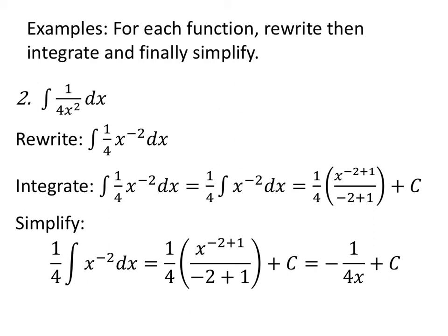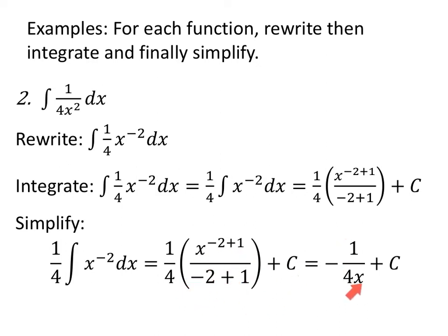For 1 over 4x squared — note the four is not being squared, only x is. Rewrite as one-fourth x to the negative two dx. The constant multiple rule lets the one-fourth come out in front. Since negative two is not negative one, we can use the power rule: the integral of x to the negative two dx is x to the negative two plus one over negative two plus one. Negative two plus one is negative one, giving negative one-fourth times x to the negative one, which becomes negative one over four x plus C.